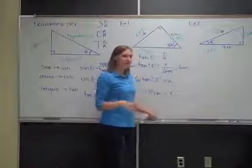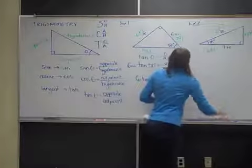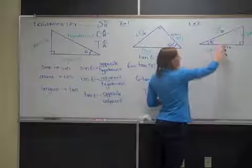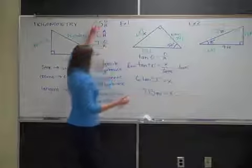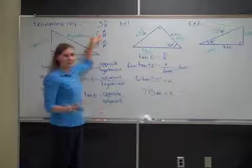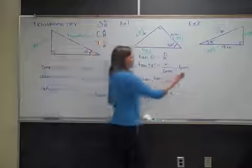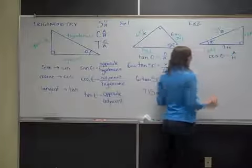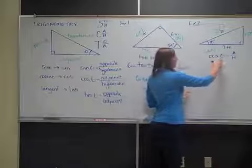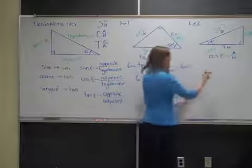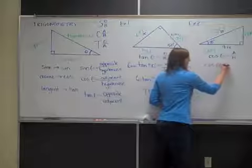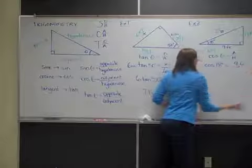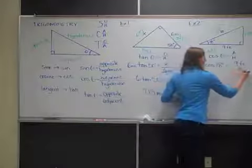Let's look at the information we have and what we're looking for. We've got adjacent and hypotenuse. Adjacent is what I'm given; hypotenuse is what I'm looking for. Looking back at SOHCAHTOA, adjacent and hypotenuse corresponds to cosine. So I'll use the cosine equation: cosine of 18 degrees equals the adjacent side, which is 9 feet, over the hypotenuse, which is Z.